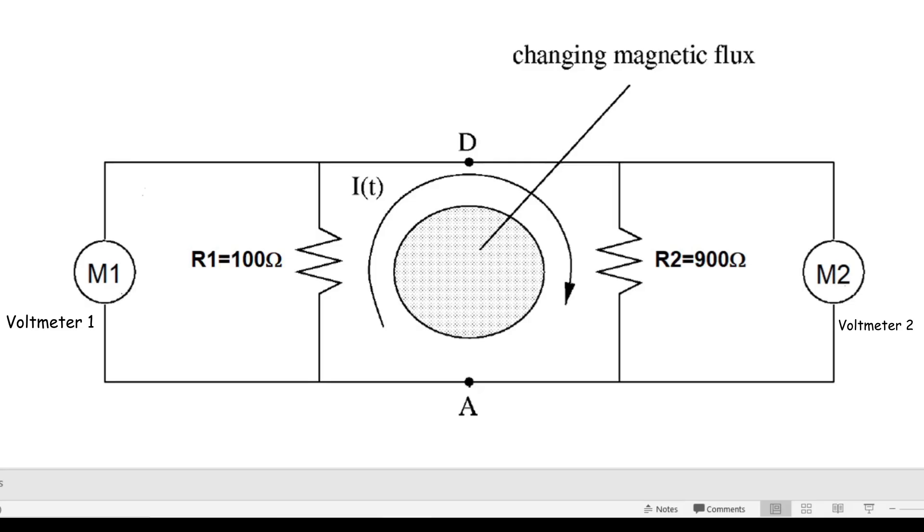Now let me summarize the demo circuits used in the discussion, and for those who have not seen the videos, the link is provided below. The circuit comprises two resistors, R1 equal to 100 ohms on the left and R2 equal to 900 ohms on the right, connected at two common points D and A. A changing magnetic field is placed inside a shaded area. At a particular moment in time, the changing magnetic flux generates an EMF of 1 volt, and the current of 1 milliamp flows in the circuit.